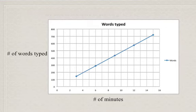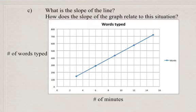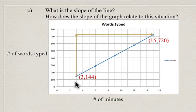And what we're going to do now is take a look at the slope of the line, and we want to know how this relates to the situation. So if we take the first point, which was, and the last point, and use those to calculate our slope, the first point was 3 minutes, 144 words. The last point was 15 minutes and 720 words. And the rise here is 576, and the run is 12.